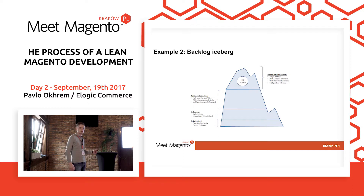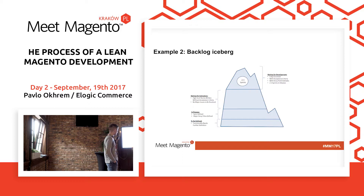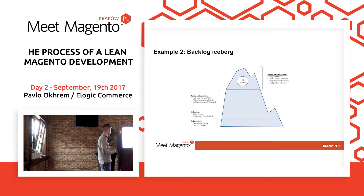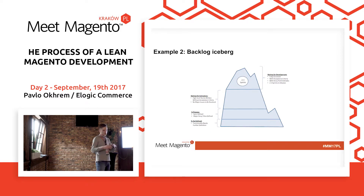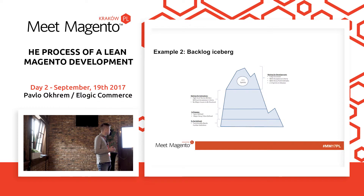Who has heard of the backlog iceberg before? It's really a very cool thing. First, you have the tasks that are at the very beginning — the tasks that are not defined yet, when you want to have the further definition of the backlog tasks. At the second level, you have the tasks that are in process — they are defined and have the major story titles. On the third level, you have the tasks that are waiting for estimation; they have the high-level stories and all the definitions, and they're waiting for estimation by dev ops. And the very top one is the tasks that are waiting for development — the ones that are fully described and ready to be taken to work.